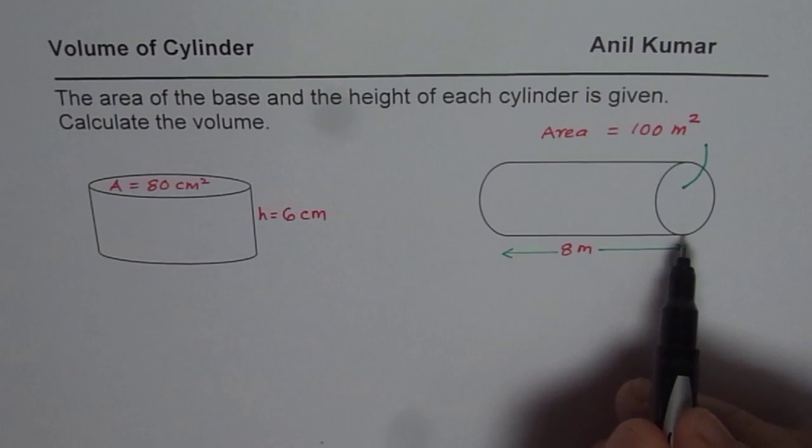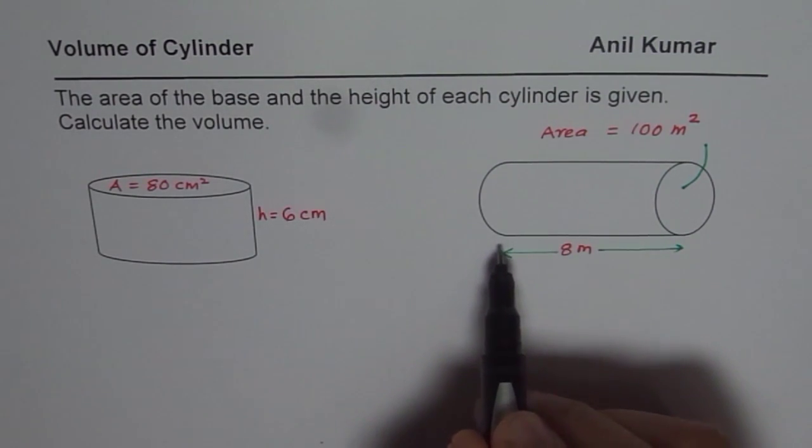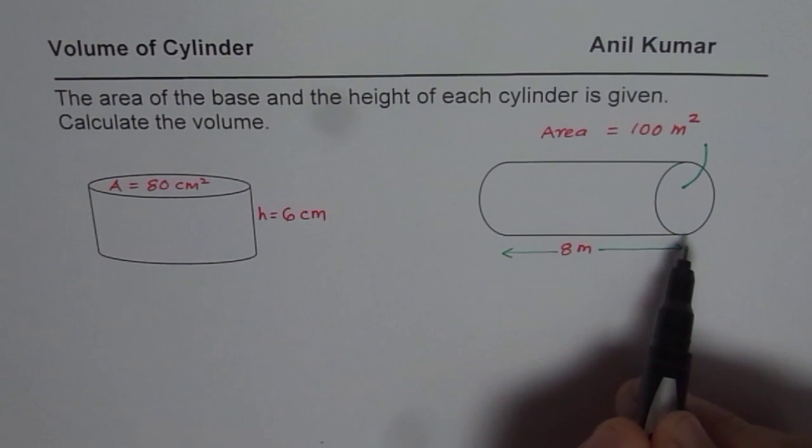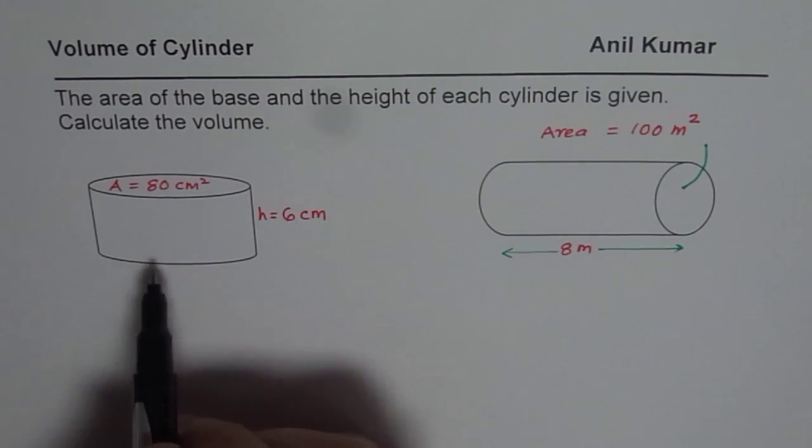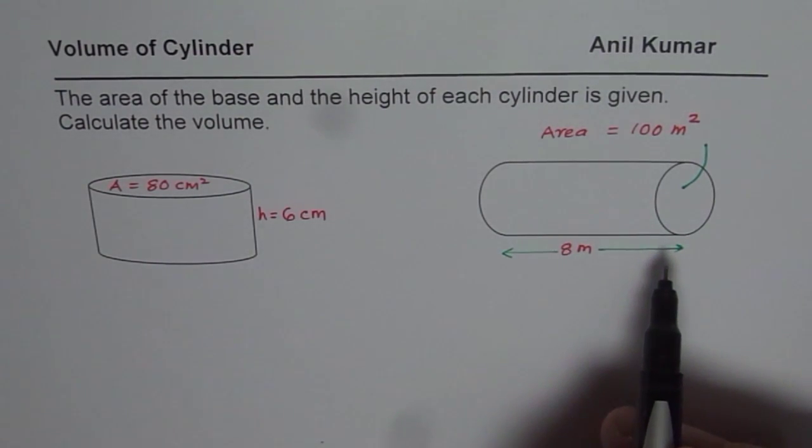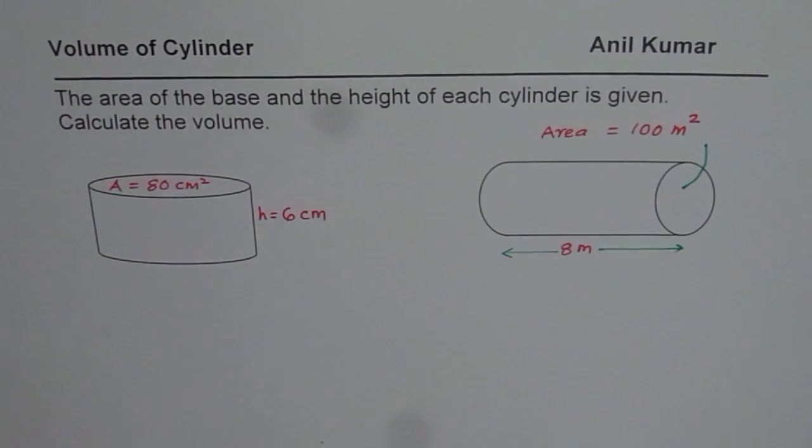So at times height may look like length to you and the area of the base could be like shown here. So we could place the cylinder upside down or lying as we have here. So it is all up to you to figure out what is the base and what is the height.